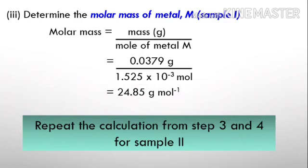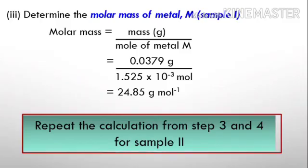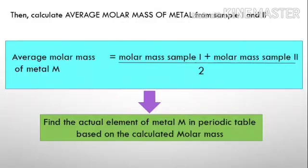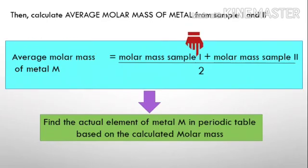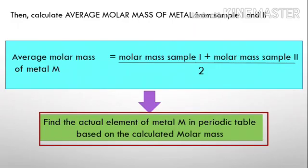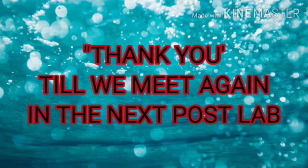Repeat the calculation from step 3 and step 4 for sample number two. Calculate the average molar mass of metal from sample 1 and sample 2. When you obtain the molar mass, divide by 2 to get the average molar mass of metal M. This is what we're going to use to find the actual element of metal M in the periodic table based on the calculated molar mass. Thank you, till we meet again in the next post-lab. See you, bye.